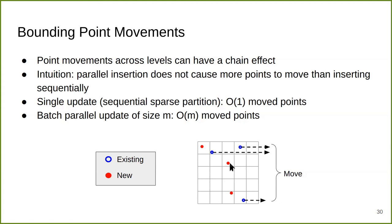This example gives intuition on one level of how this works. We have blue points as existing points and three red points being inserted. Suppose they are inserted sequentially: the first insertion moves one blue point; the second insertion, because that point is no longer here, has no effect on it but moves another point to the next level; the third insertion moves another point. When all three points are inserted in parallel, still only those three point changes occur — no more points change.